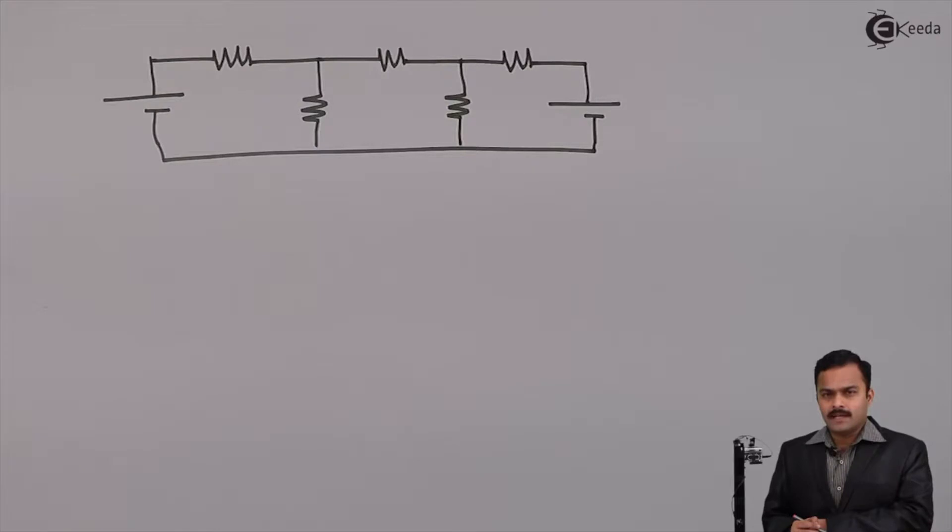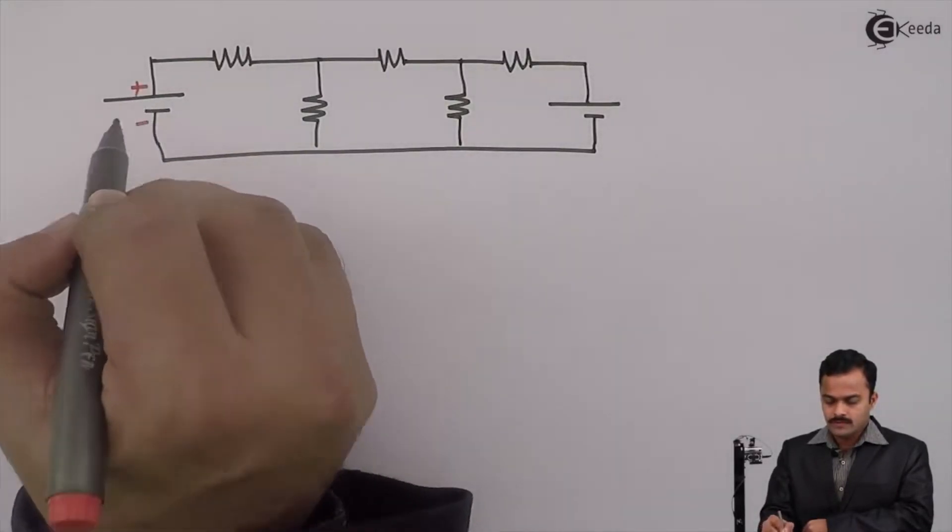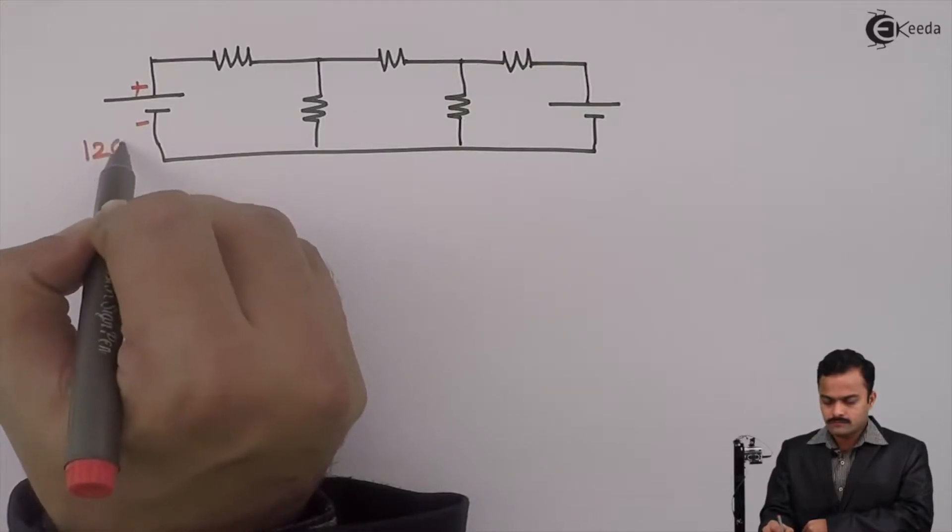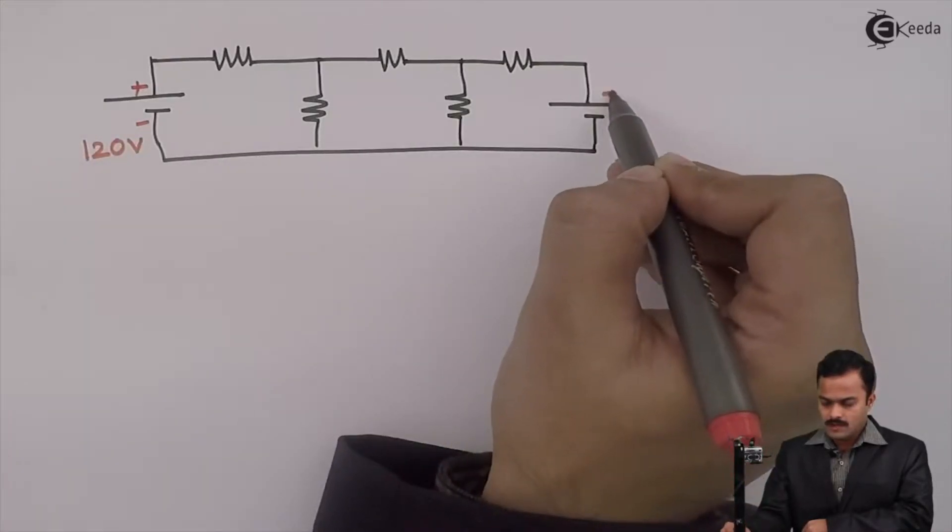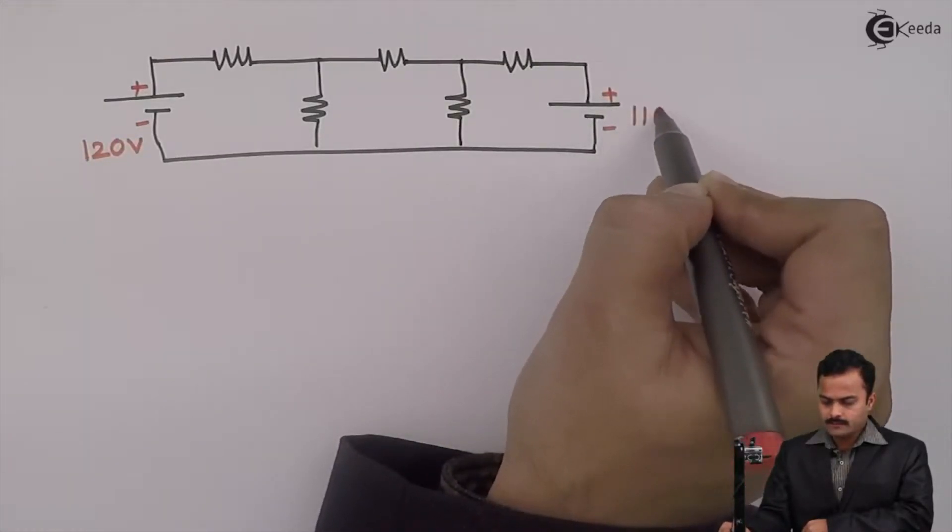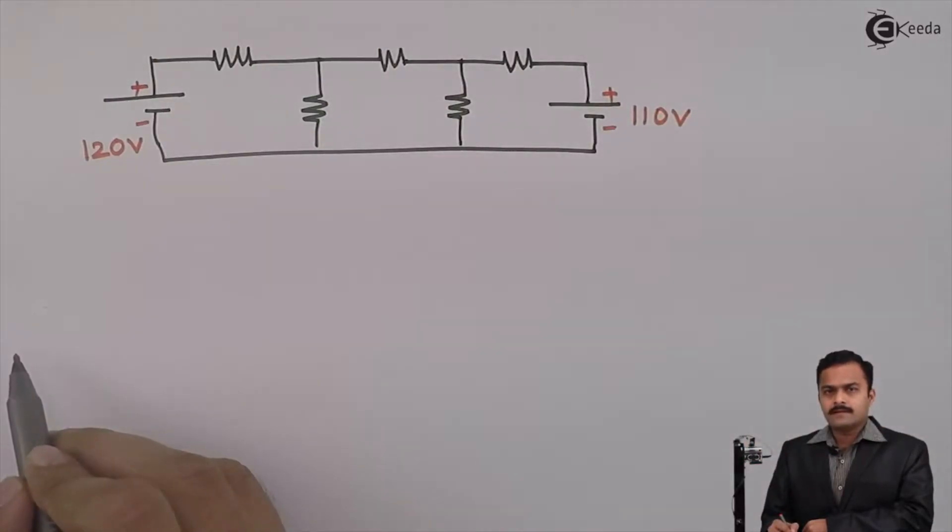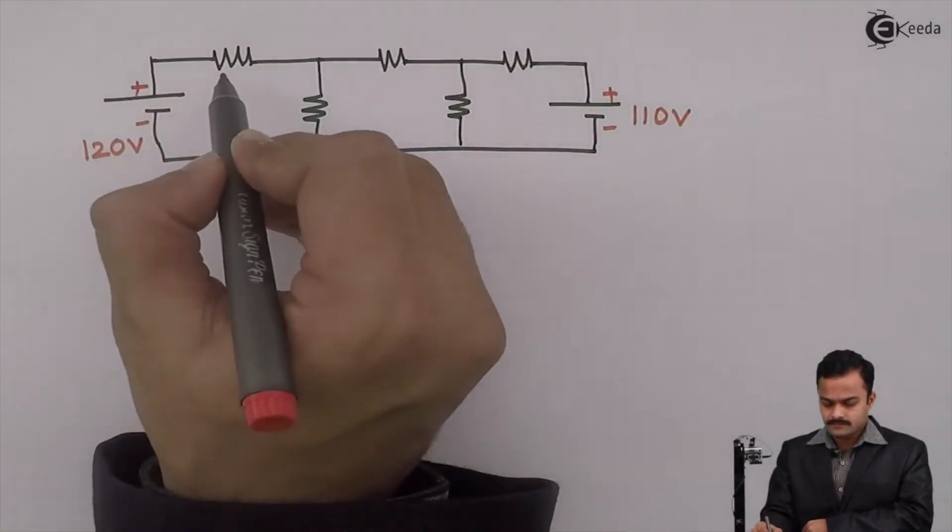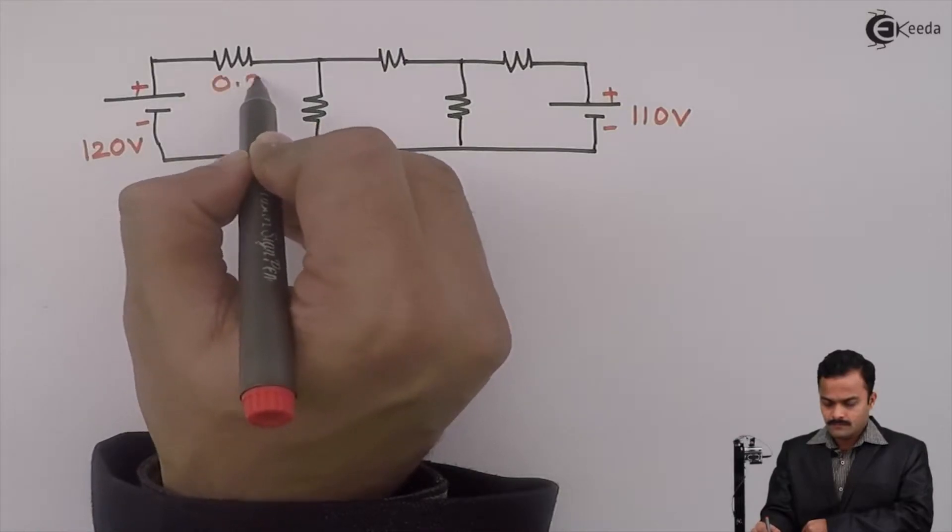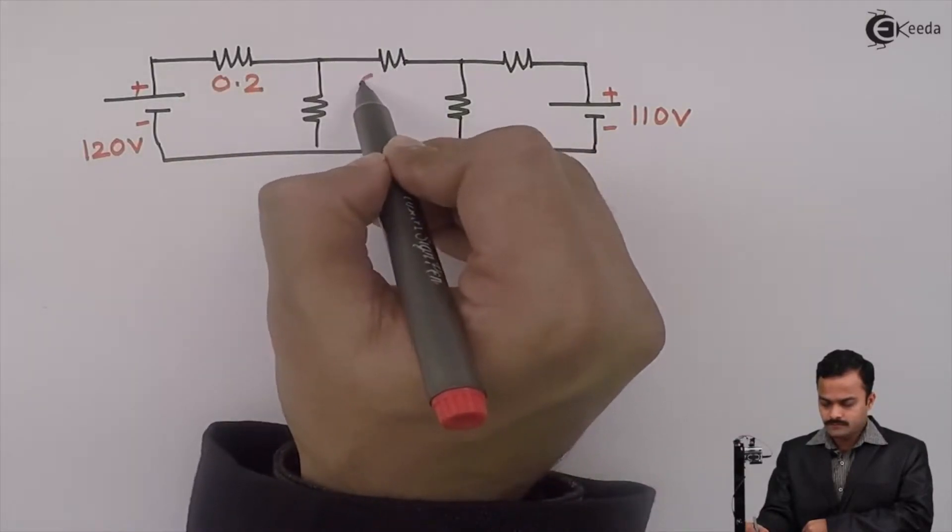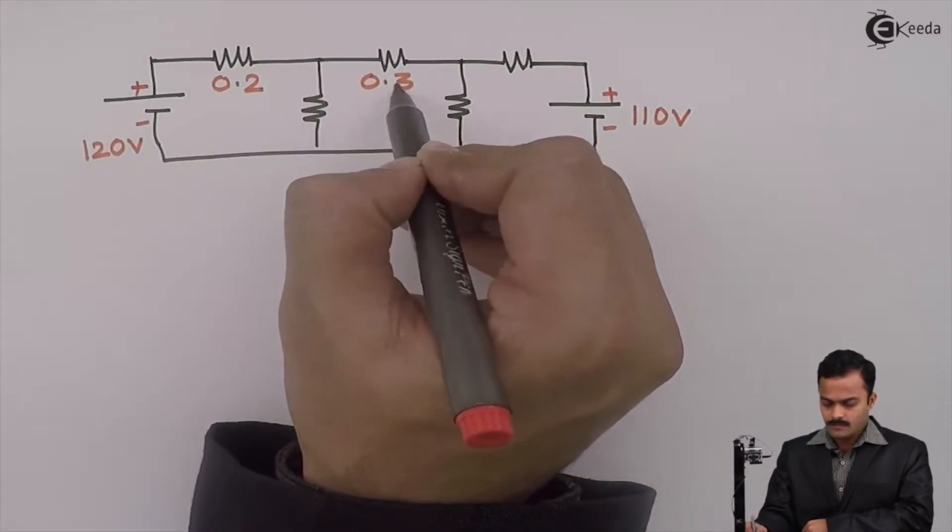I have taken a numerical having two voltage sources of a value 120V and 110V and resistances are given 0.2, 0.2, 0.2, 0.3 and 0.3.